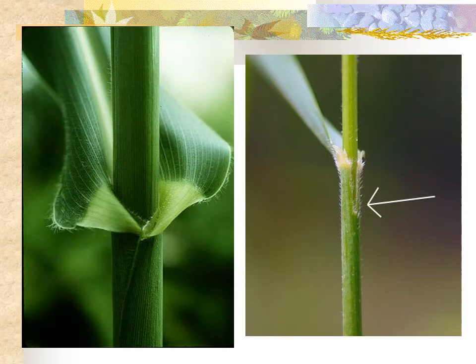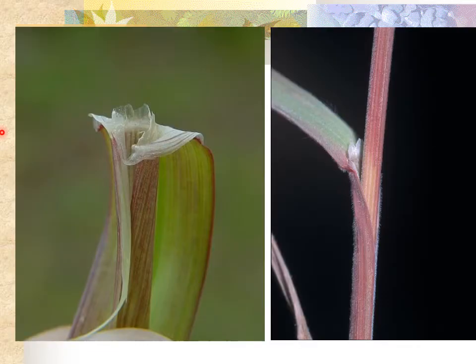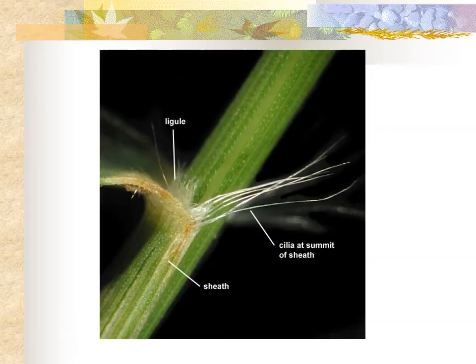The sheathing leaf base can be closed, as seen in one image, or open, as seen in another. The ligule sits at the junction of the leaf blade and the stem, and can be membranous, as shown in one example, or hairy rather than membranous, as seen in another.